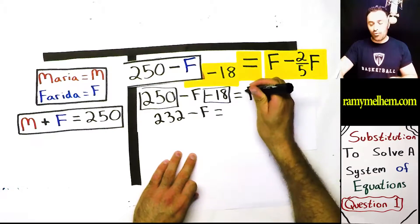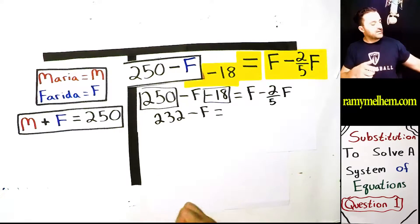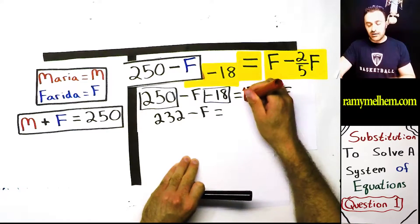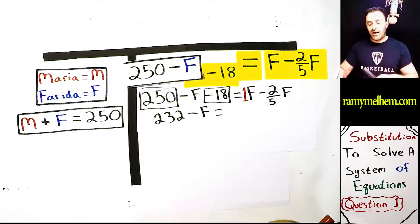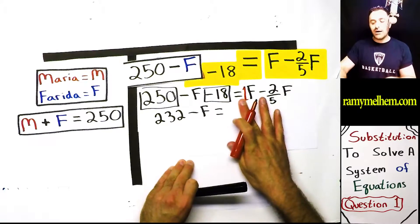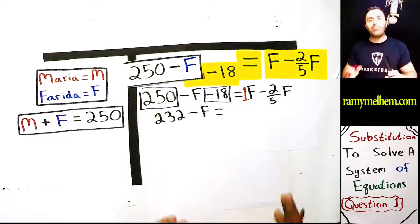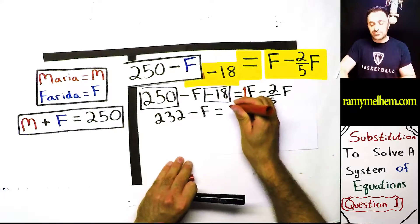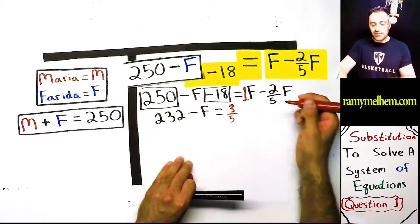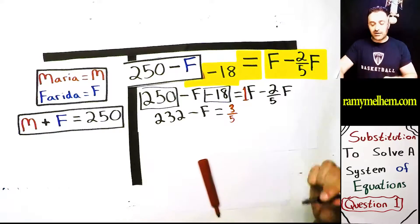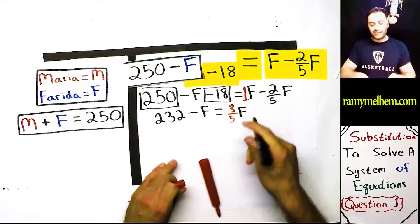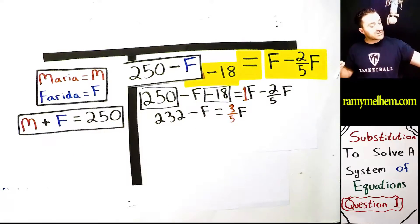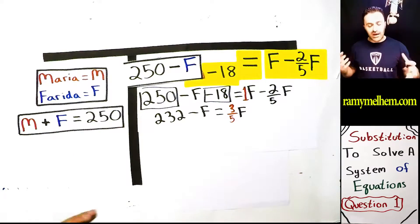So I write 232 minus F equals this side. Look, I can combine these two here. This is a one here, right? If you don't see a number, there's still a number there. It's a one. Okay, you got to remember how to subtract fractions. Ignore the F's. Ignore those F's. Just go one whole minus two-fifths. If you take a whole pizza and you minus two-fifths out, what's left over? You got three-fifths remaining. Three-fifths. Let's put that F back. There we go. So I combined all of this and I turned it into that. Now here's my equation. It looks more simple, doesn't it?